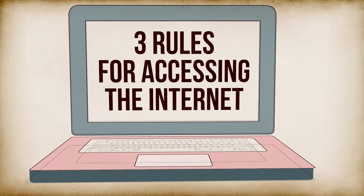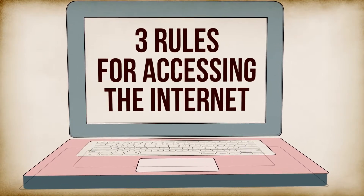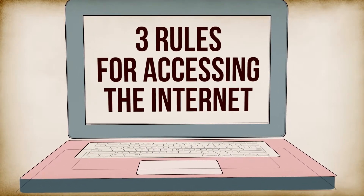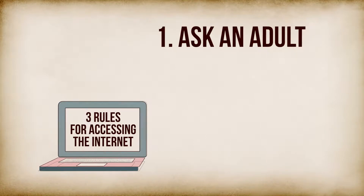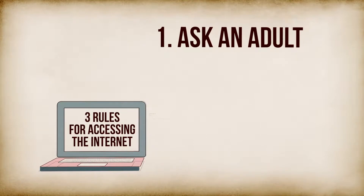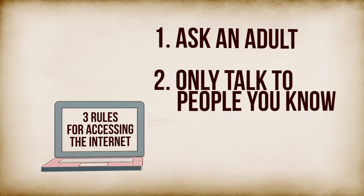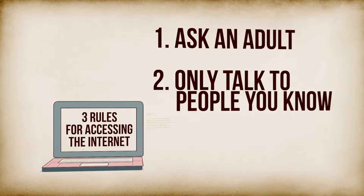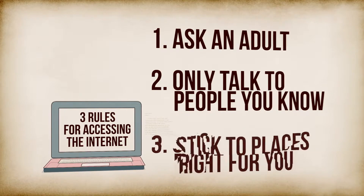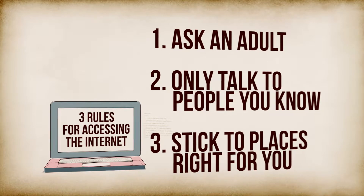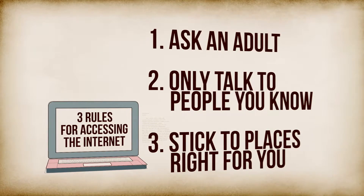First, let's discuss the three rules for accessing the internet. First, ask a trusted adult before surfing the web. Second, only talk to people you know. And third, stick to places just right for you.